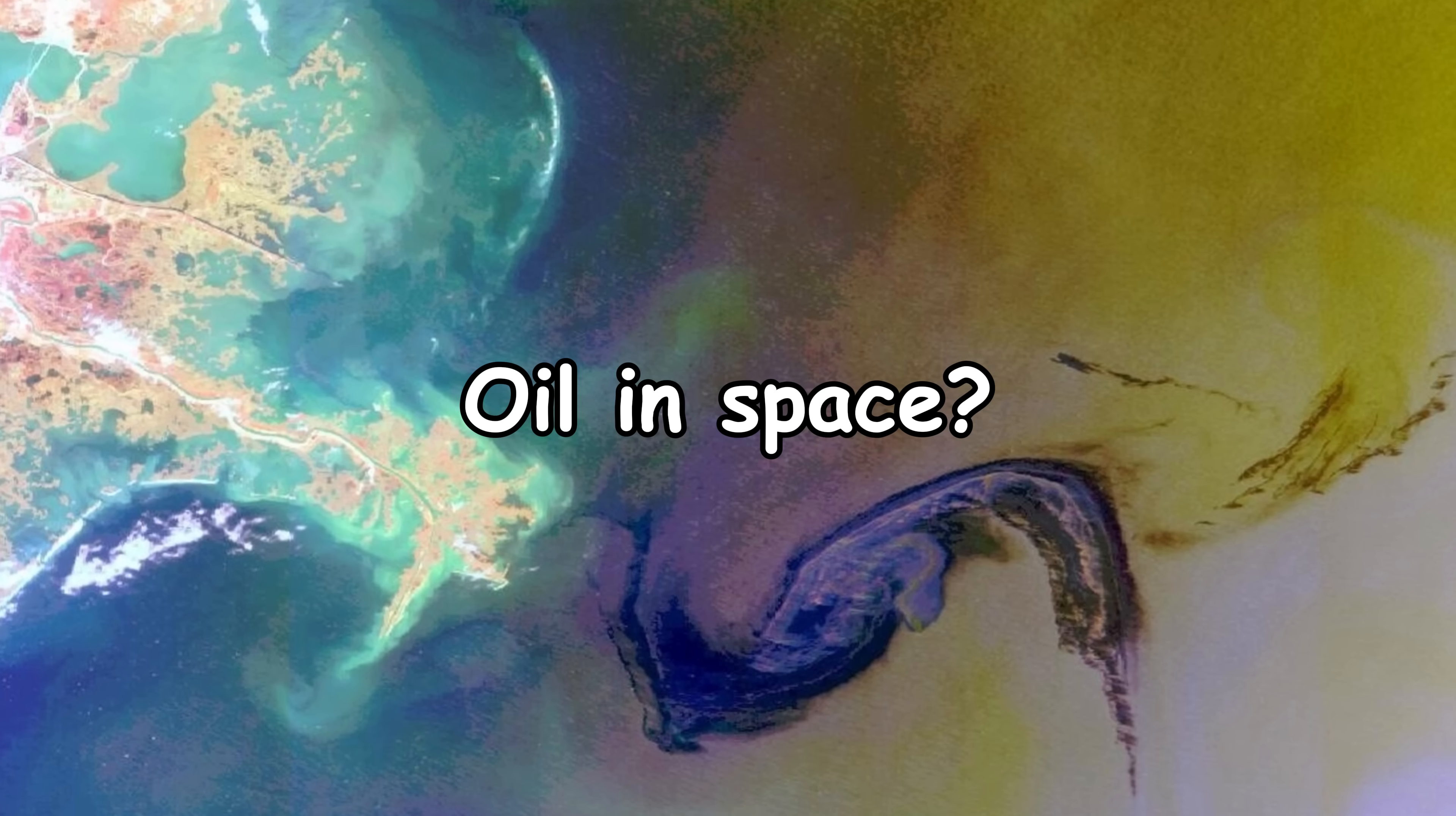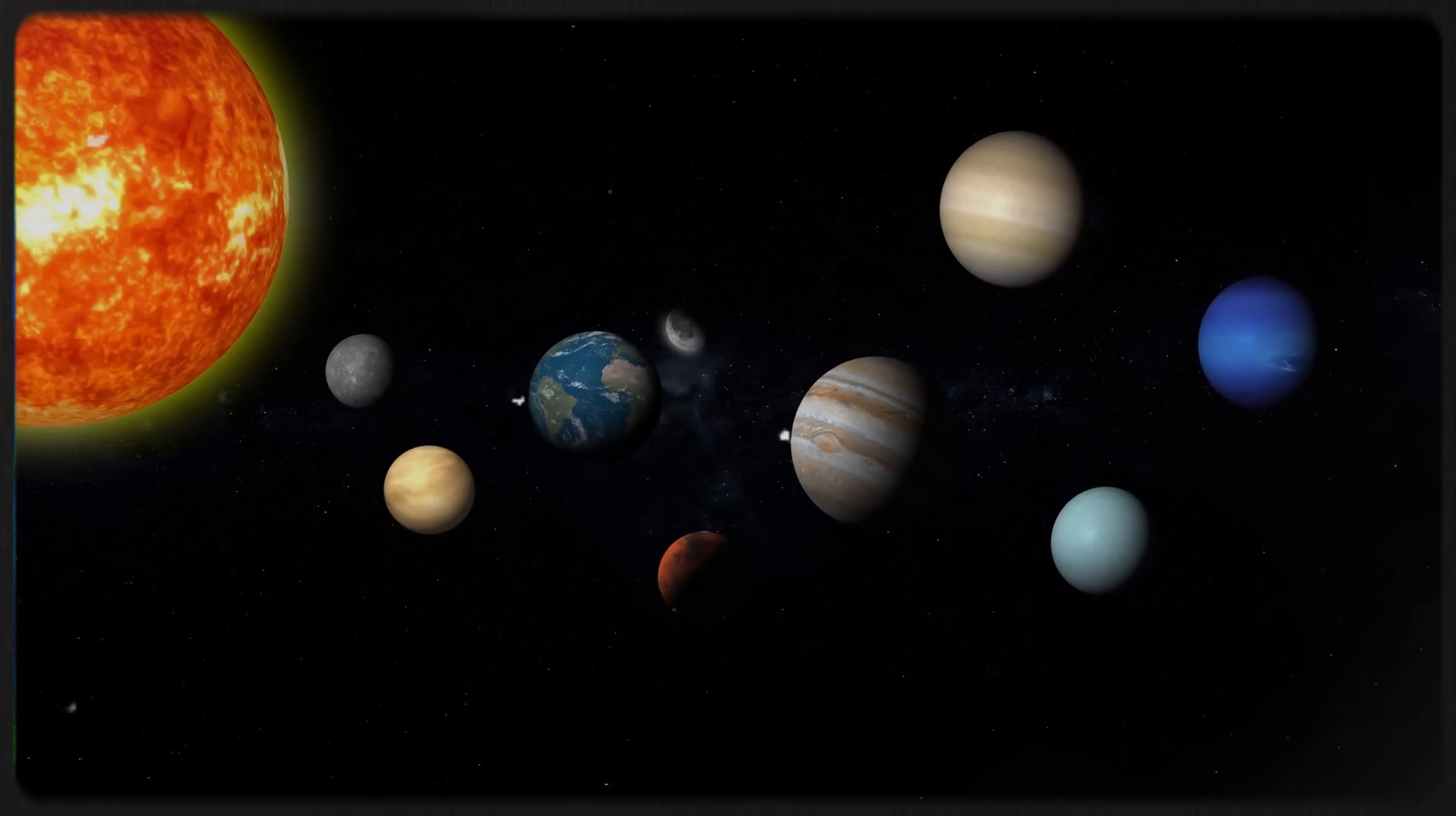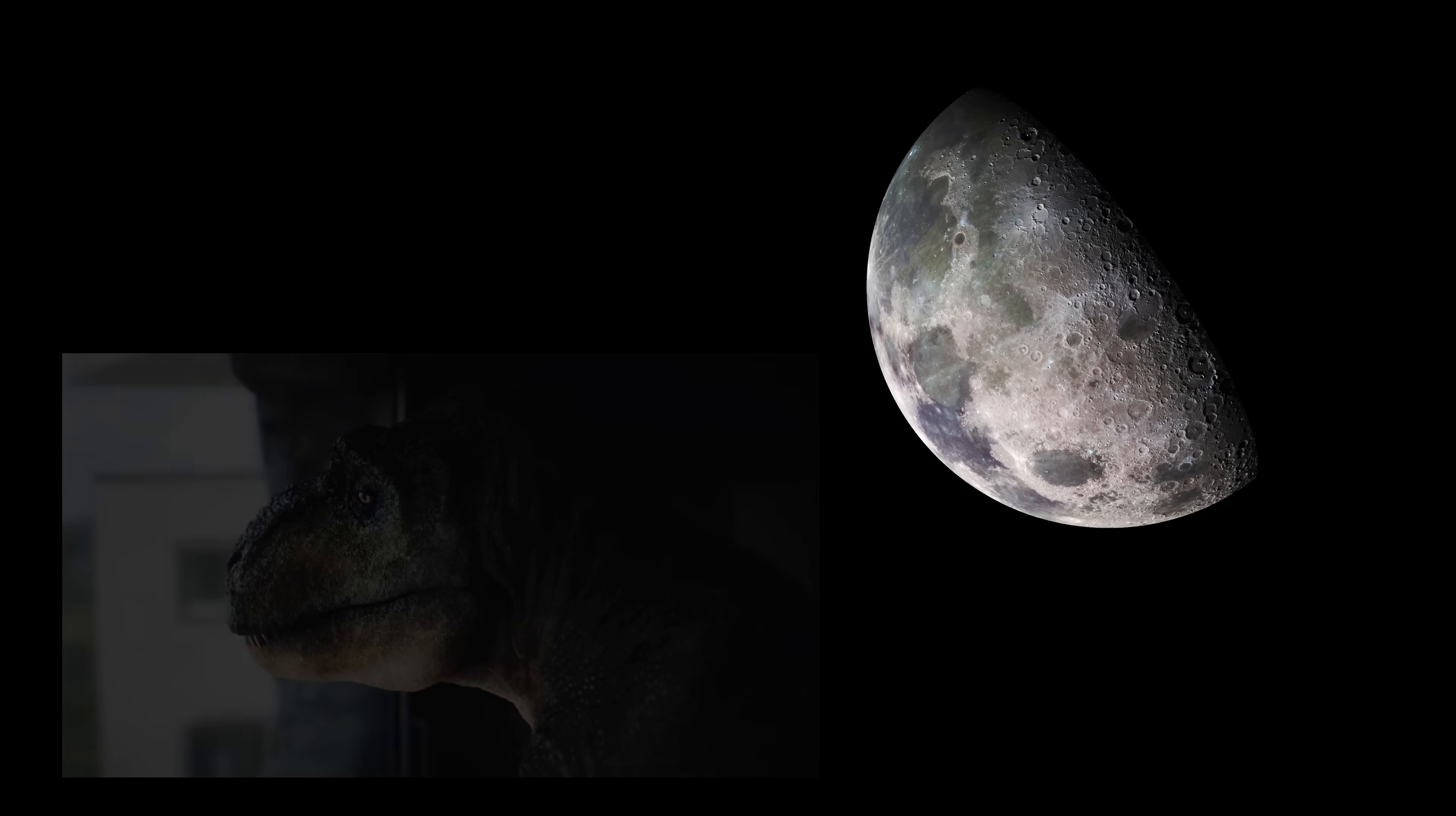Bonus round. Oil in space. Here's a wild thought. Could oil exist on other planets? Technically, if another world had life and the right geological conditions, it could form hydrocarbons. In fact, Saturn's moon Titan has lakes of liquid methane and ethane. It's basically an oil moon, minus the dinosaurs.